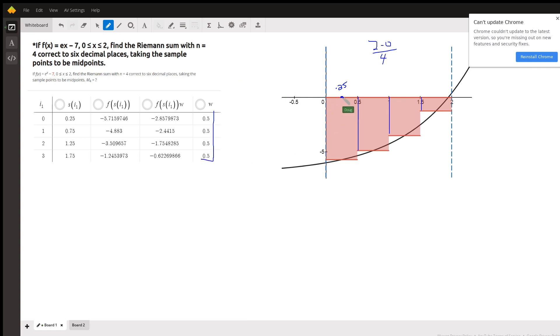And then we're supposed to use the midpoint of each sub-interval to calculate the height of the rectangle. So the midpoint of this first rectangle is the average of 0 and 0.5, which is 0.25.